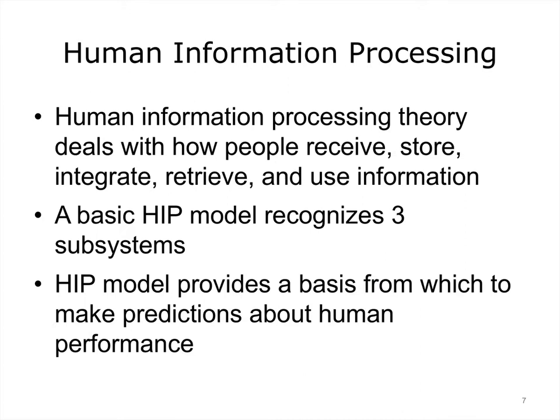Human information processing theory deals with how people receive, store, integrate, retrieve, and use information. The basic model recognizes three subsystems: a perceptual system that processes incoming sensory information, a motor system that controls action and physical behavior, and a cognitive system that provides the processing that connects the two systems. We're going to briefly deal with different dimensions of these subsystems.